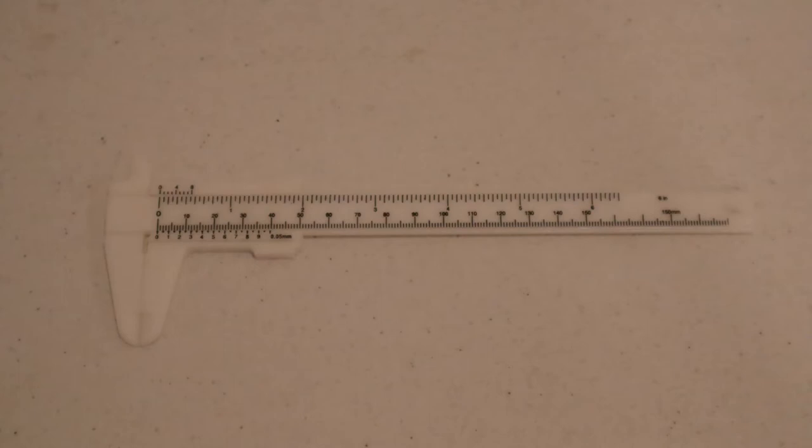Zero error, abbreviated ZE, represents the distance between where the tool should measure zero and where it actually measures zero. If, for instance, you had a ruler where the zero mark was not aligned with the edge of the tool...